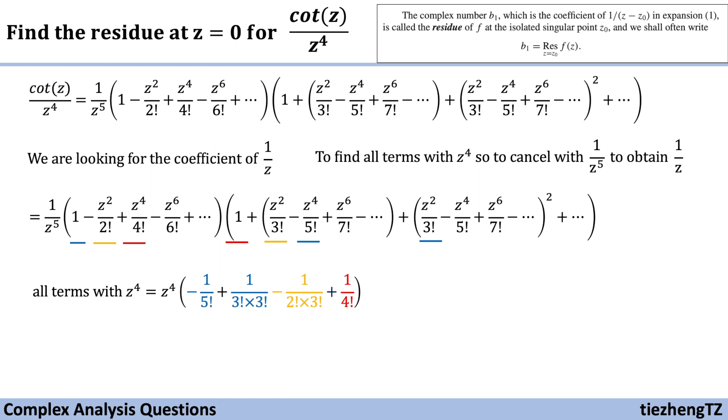So the next step, we just need to do the simple math to calculate the value of the term with z to the power of 4, which is minus 1 over 45. So you can check with my answer. Let me know if I was wrong.